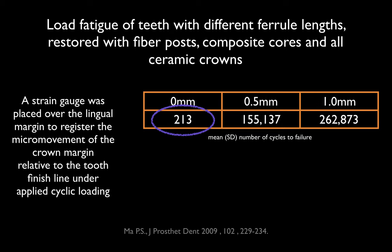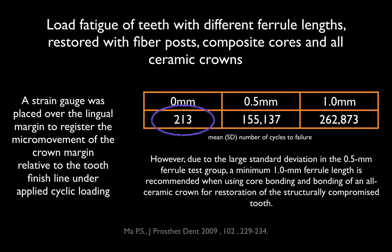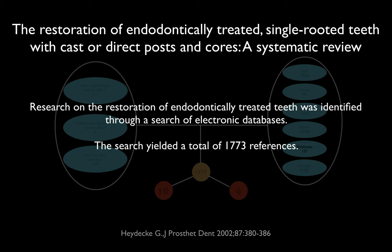With a one-millimeter ferrule, it was over 260,000 cycles before the restoration failed — and they just stopped the study at that point. This is why you have to read entire articles rather than relying on just the abstract. If you look at the half-millimeter ferrule bonded result of 155,000 cycles, you might think that's pretty good. But inside the article, Ma says there was a huge standard deviation, and so they could not recommend a half-millimeter ferrule.